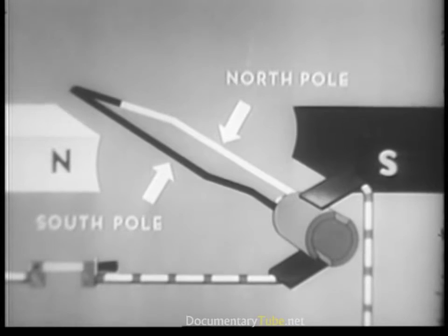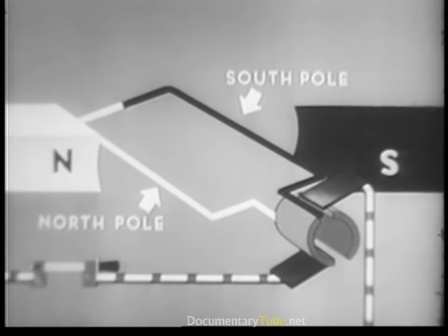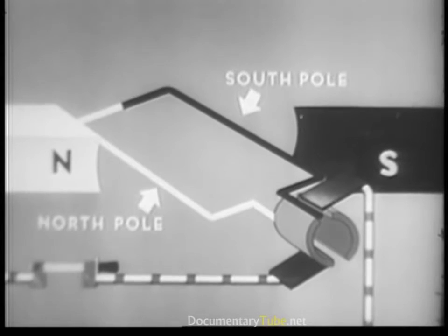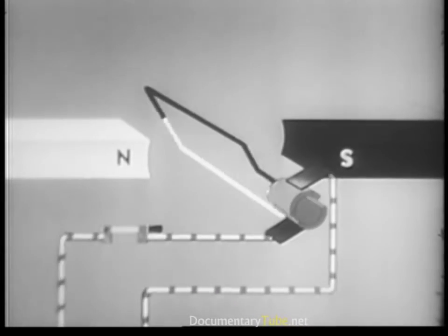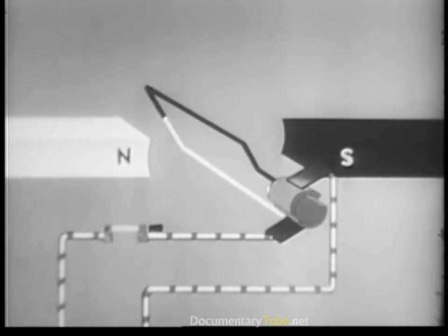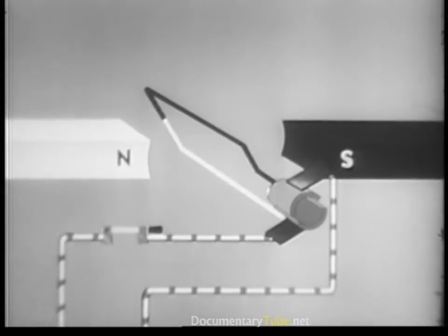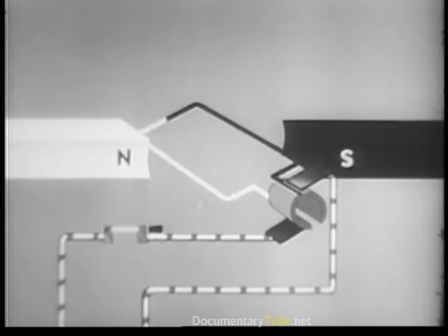The loop's south pole becomes the north pole. As such, it rotates toward its opposite, the south pole of the bar magnet. But again, the direction of the current in the loop is reversed. So the north pole of the loop and the south pole of the magnet never quite get together, and the rotary movement continues as long as current is flowing.